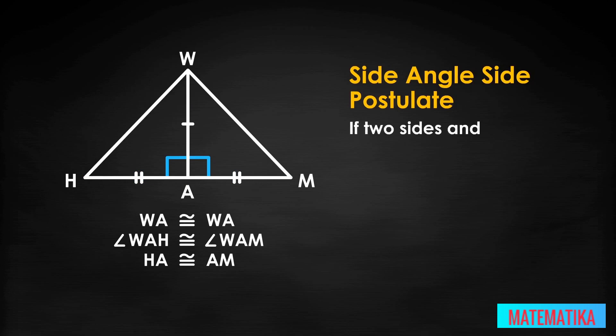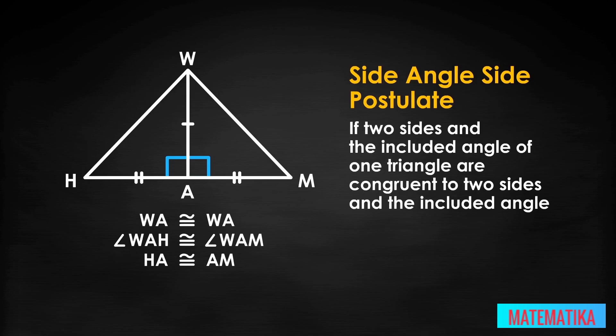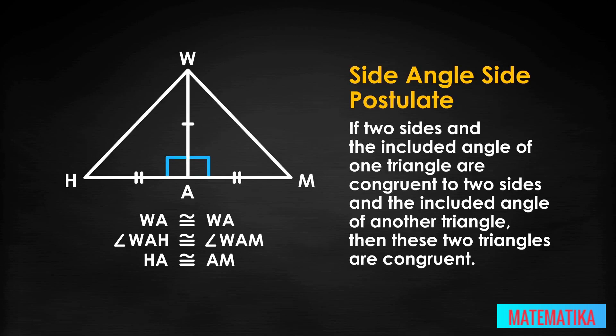This information allows us to apply the side angle side postulate, which states, if two sides and the included angle of one triangle are congruent to two sides and the included angle of another triangle, then these two triangles are congruent.